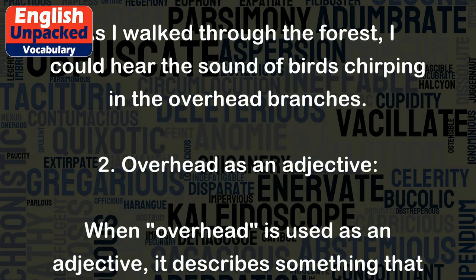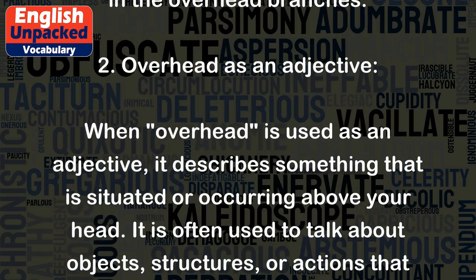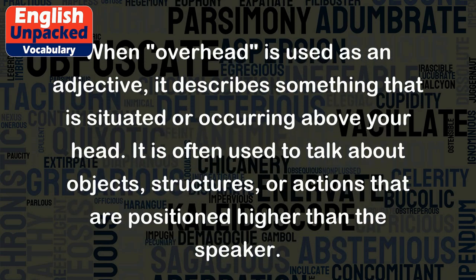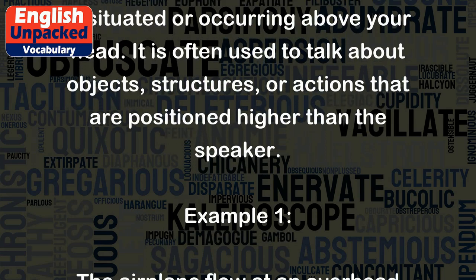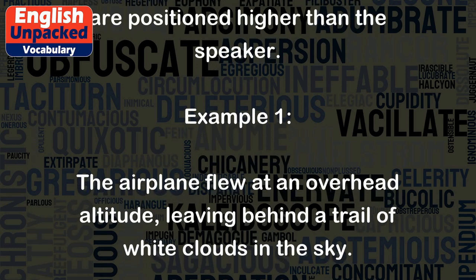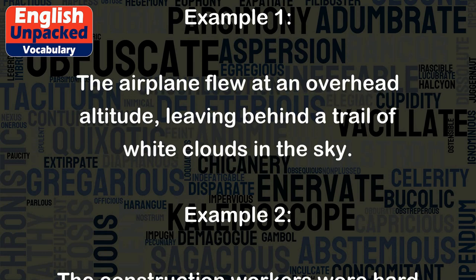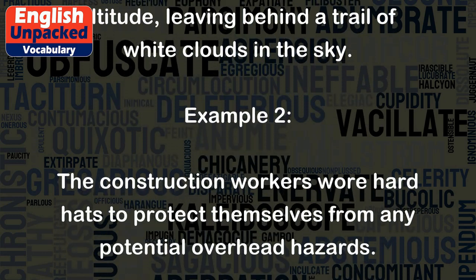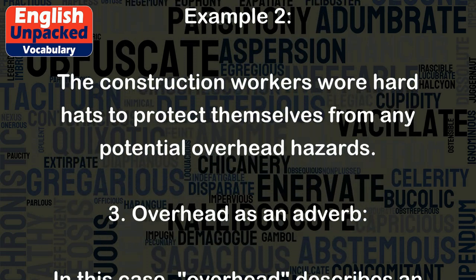2. Overhead as an adjective. When overhead is used as an adjective, it describes something that is situated or occurring above your head. It is often used to talk about objects, structures, or actions that are positioned higher than the speaker. Example 1: The airplane flew at an overhead altitude, leaving behind a trail of white clouds in the sky. Example 2: The construction workers wore hard hats to protect themselves from any potential overhead hazards.